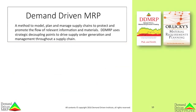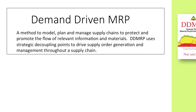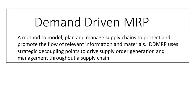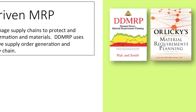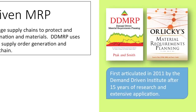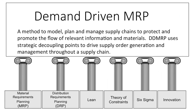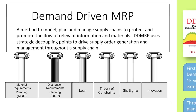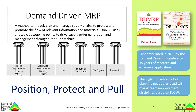This brings us to demand-driven material requirements planning, or DDMRP for short. DDMRP is a method to model, plan, and manage supply chains to protect and promote the flow of relevant information and materials. DDMRP uses strategic decoupling points to drive supply order generation and management through a supply chain. It was first introduced to the world in the third edition of Orlicky's Material Requirements Planning after 15 years of research and application. Through innovation, it fuses key planning requirements with today's prominent flow-based improvement methodologies. It can best be summarized as position, protect, and pull.